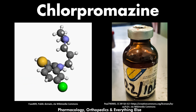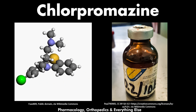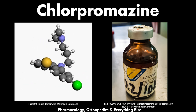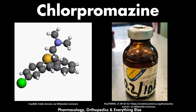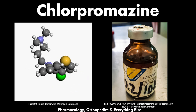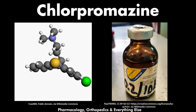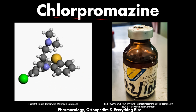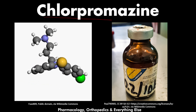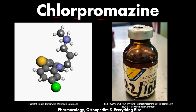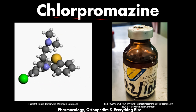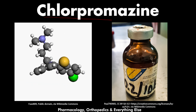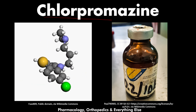Hello everyone and welcome back to the CNS Pharmacology Masterclass, where we talk about all the medications that work on the central nervous system. Here we will talk about chlorpromazine. Chlorpromazine is an antipsychotic medication that is used in the treatment of schizophrenia, and here we will explain the pharmacology of this medication.